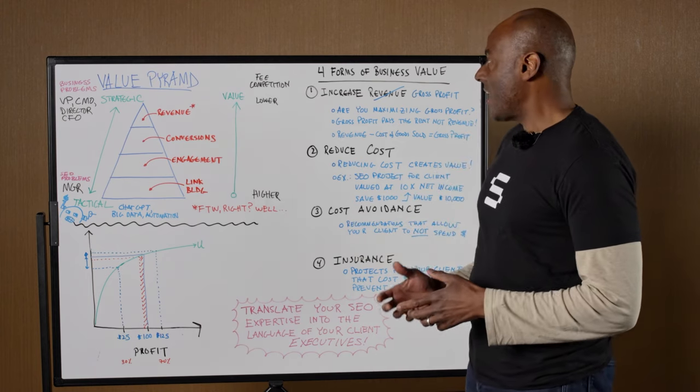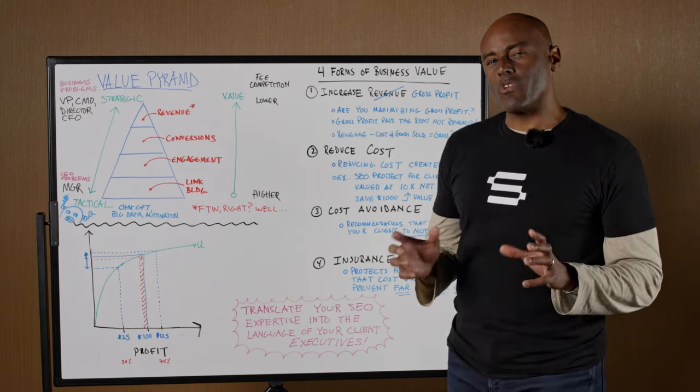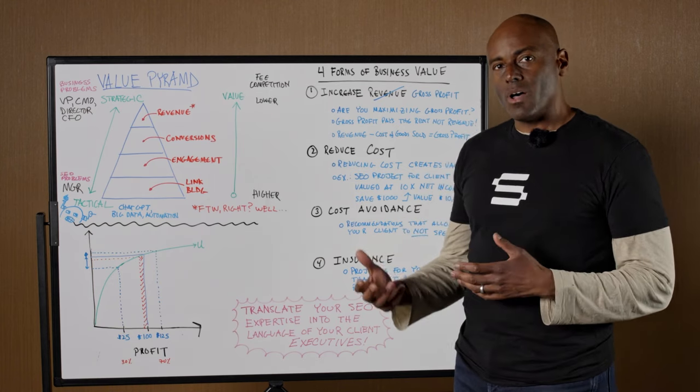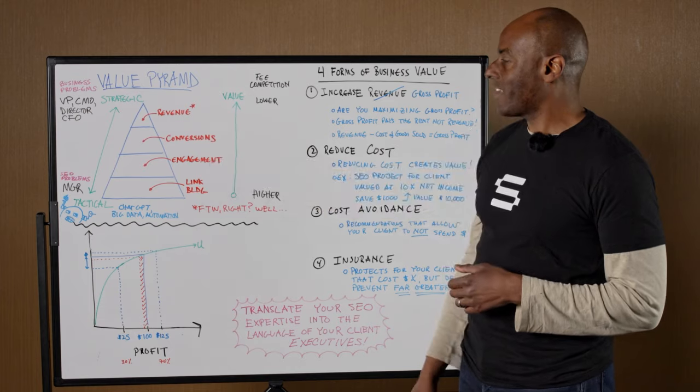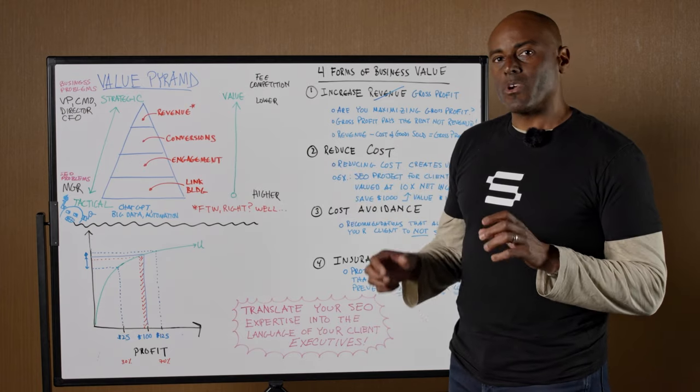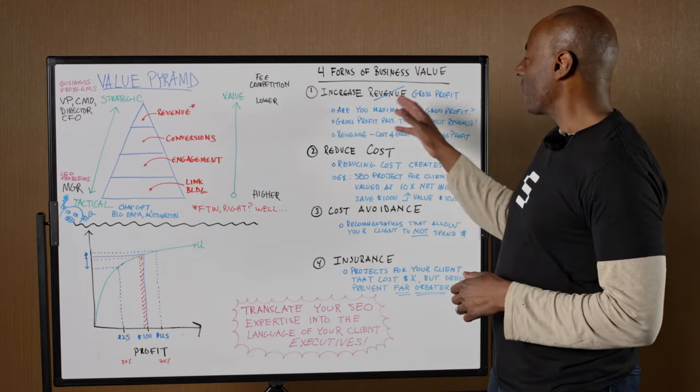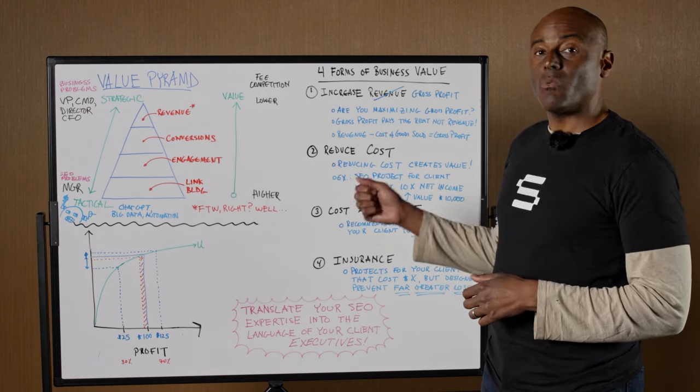Now to do it, I'm going to review two frameworks or two ways of thinking. One is the value pyramid, and then we're going to move from there to the four forms of business value.